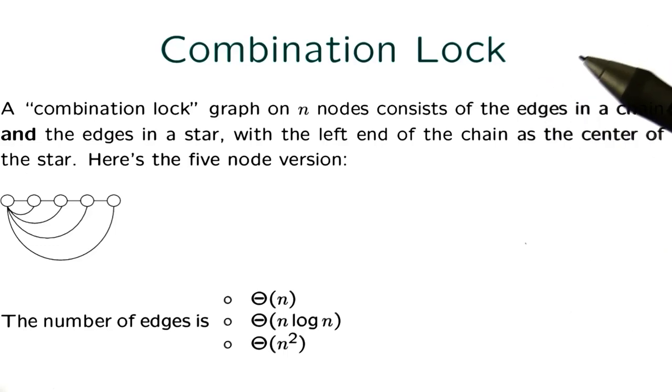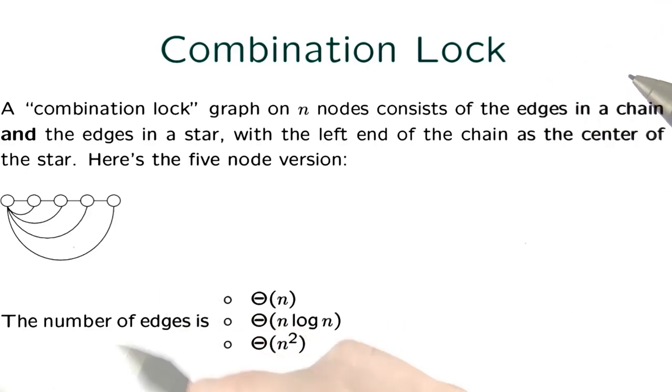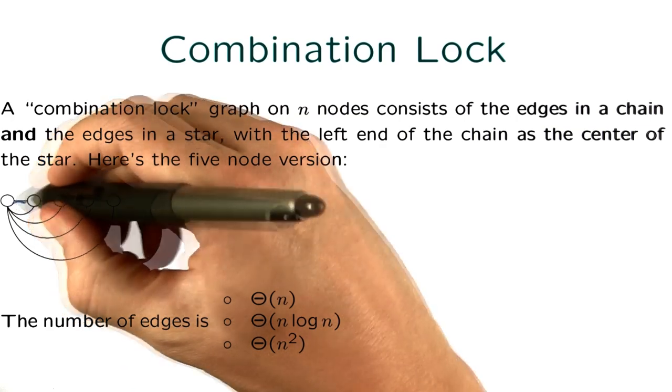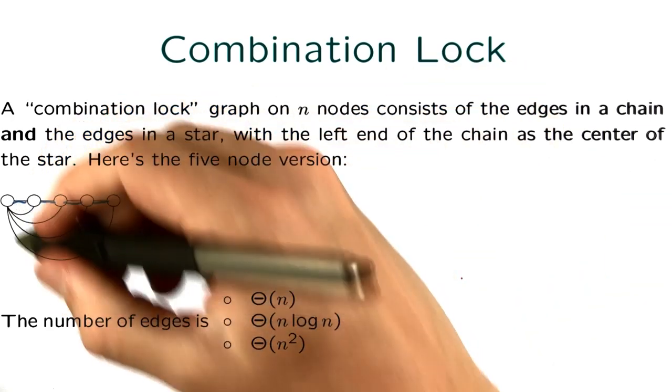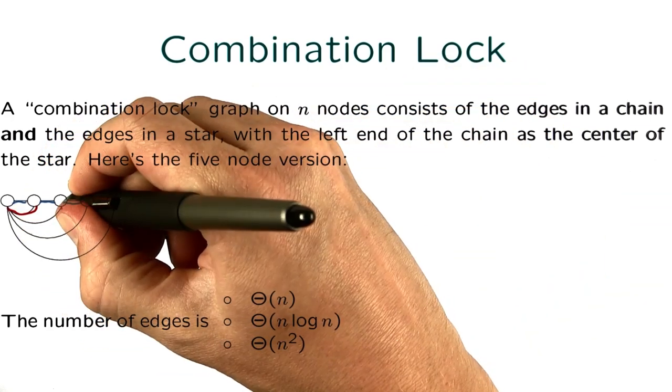In this problem, we're going to introduce a new graph: the combination lock. A combination lock consists of a chain, which are these edges, and the edges of a star, which are the edges in red.